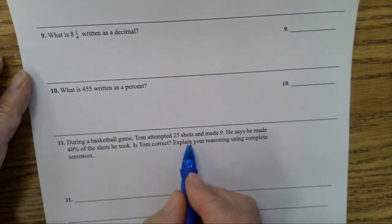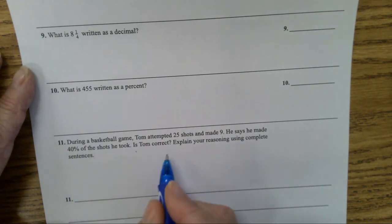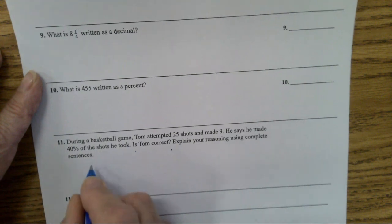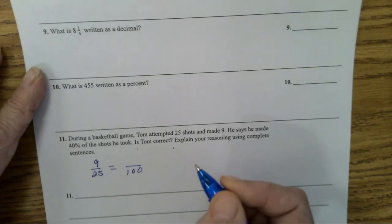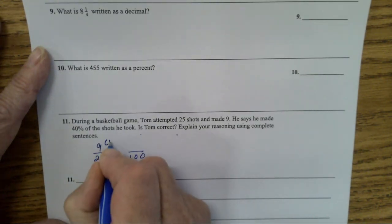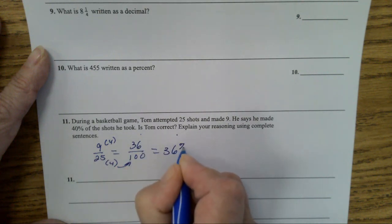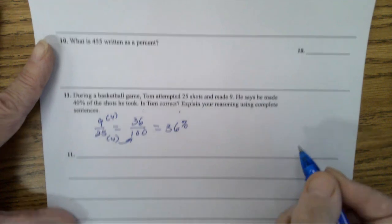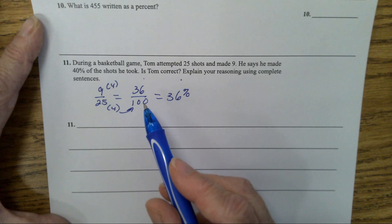Tom attempted 25 shots and made 9. He says he made 40% of the shots. Is Tom correct? So 9 out of 25 equals what over 100? 25 times 4 is 100. 9 times 4 is 36. He made 36%. You will have to explain: Is he correct or not correct, and explain why.